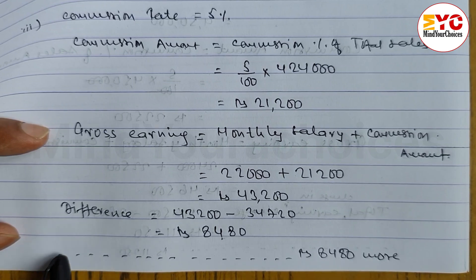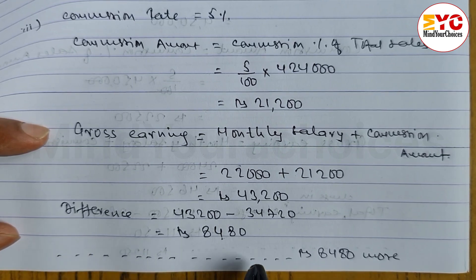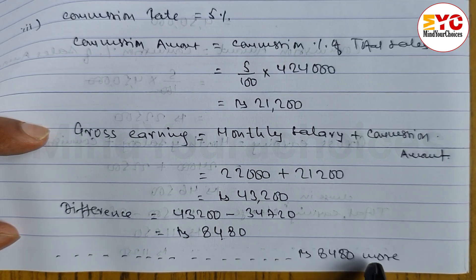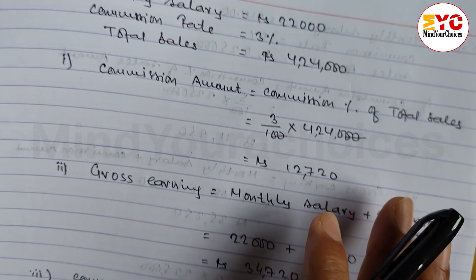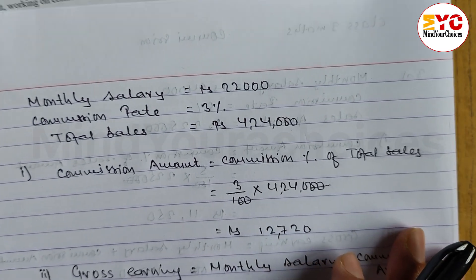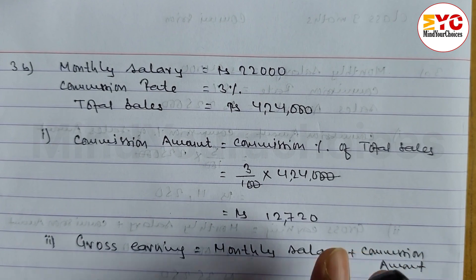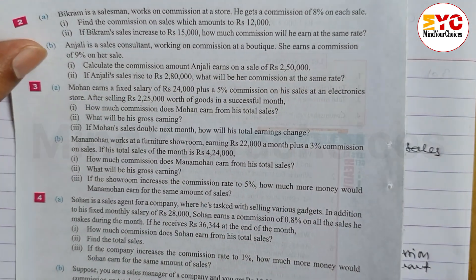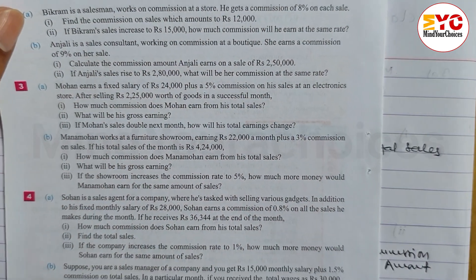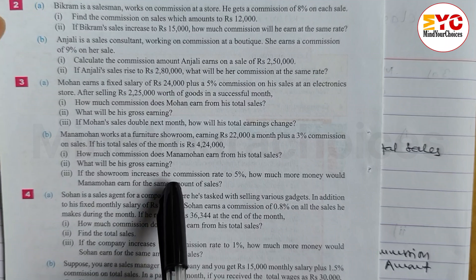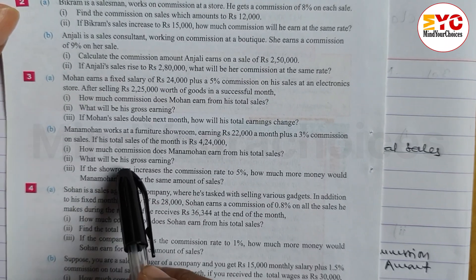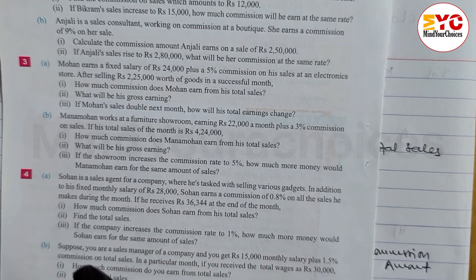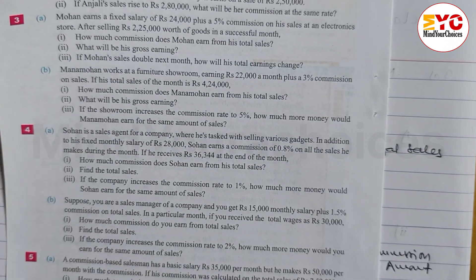If the commission increases to 5%, he earns Rs. 8,480 more. Hope you understand this question number 3. Please like the video and share with your friends, and don't forget to comment. Next video we will do question number 4.